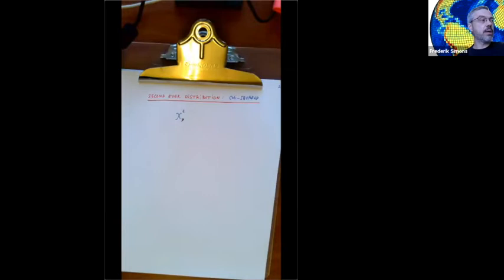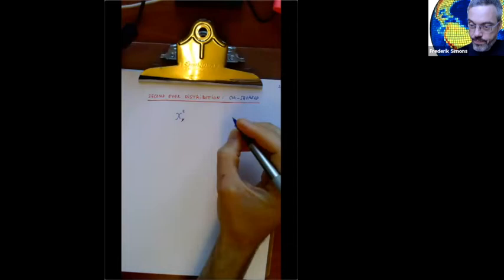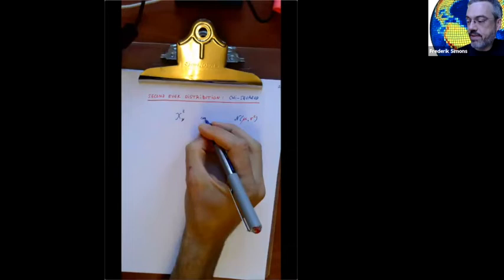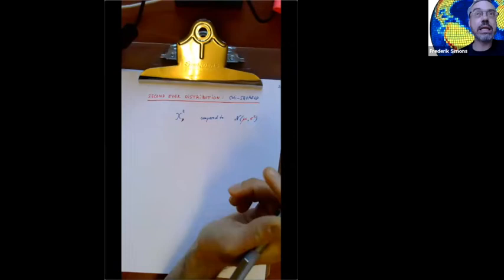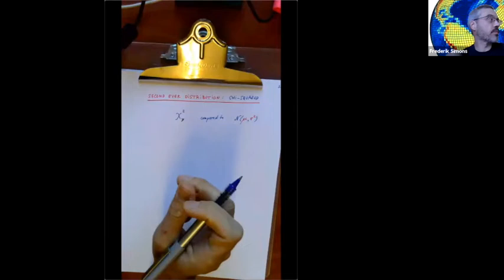If I say here's a distribution, what's your next question? What's the mean of the distribution? And your second question? What's the variance? So how do I read these off from chi-squared ν? What's the mean, and what's the variance?